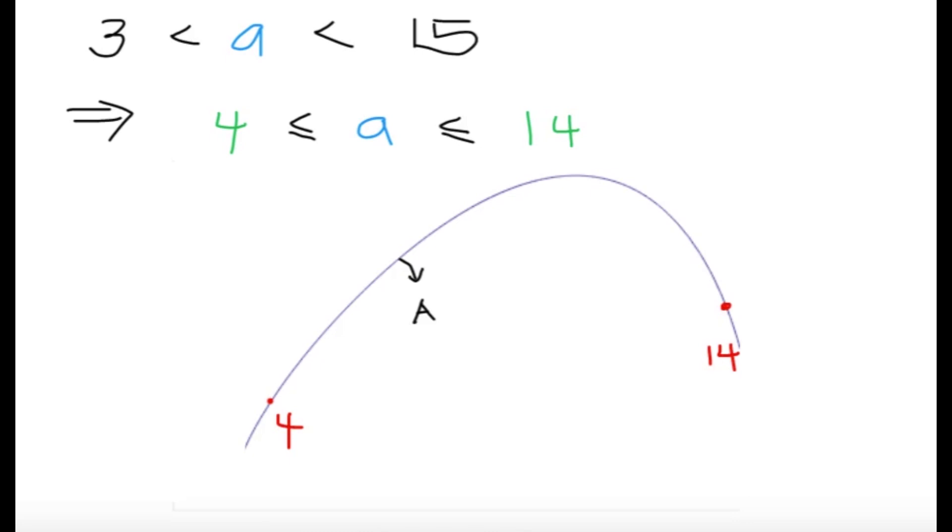So, 3 less than a, and then a should be less than the sum of 6 and 9, which is 15. So, a must lie between 3 and 15, exclusive, but a is a positive integer. So, 4 and 14 it is.